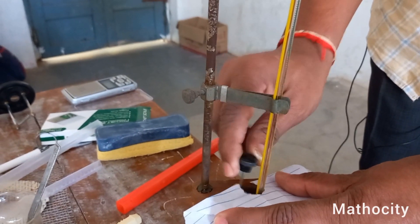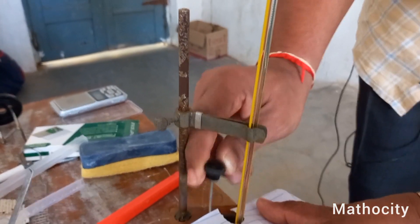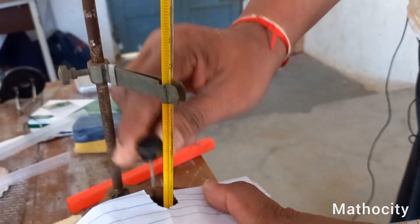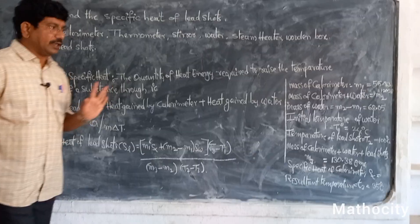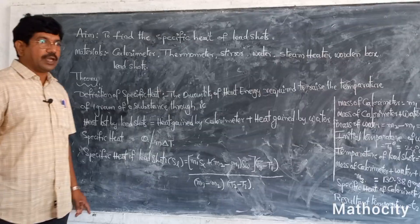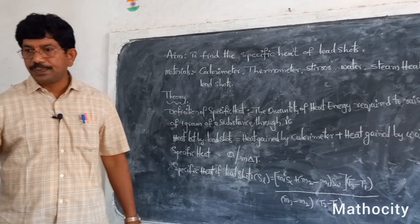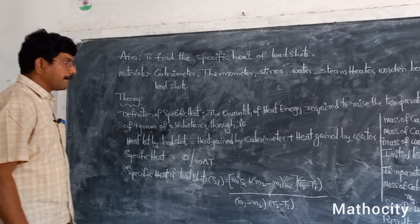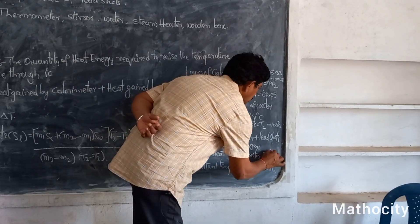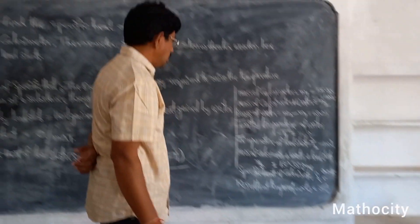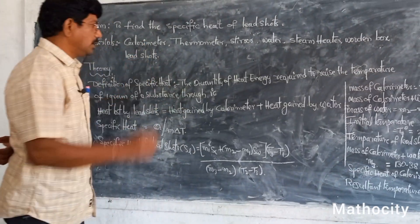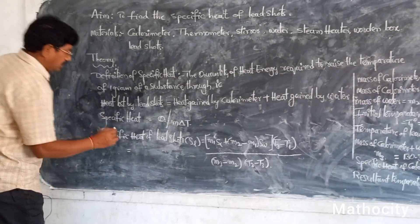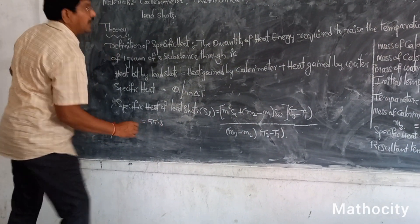I am stirring the water continuously so that the temperature is equalized. Open your textbook — the specific heat table is given. What is the specific heat of copper? It is 0.095. Specific heat of water is equal to 1. Now I am calculating: M1, the mass of the calorimeter, is 55.33 grams.